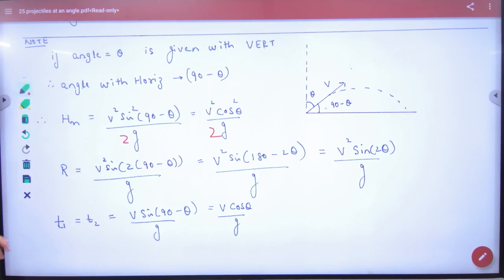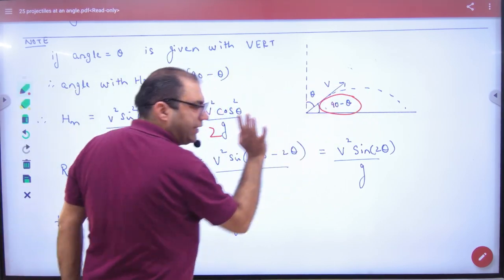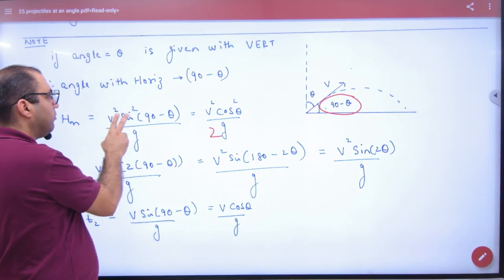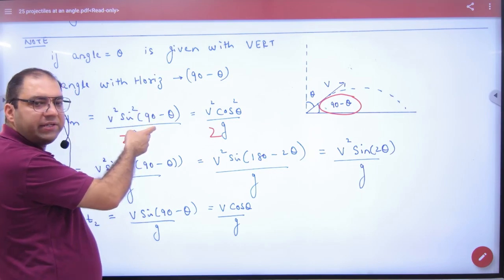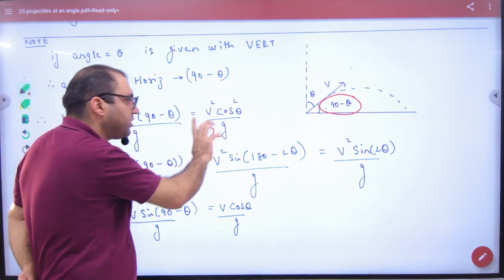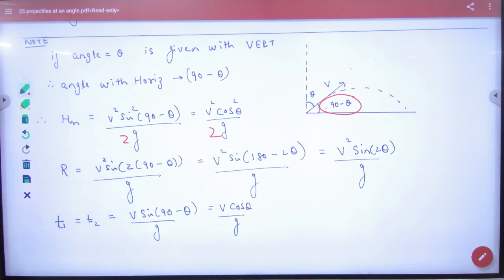But here, where the theta is replaced, 90 minus theta. So maximum height V square sine square 90 minus theta by 2G. Sine of 90 minus theta, what is cos theta? Cos square theta by 2G. So maximum height formula, there is no doubt in it. Clear here.